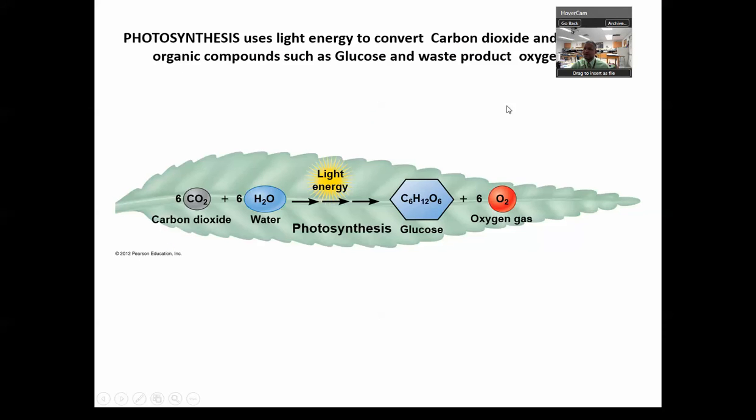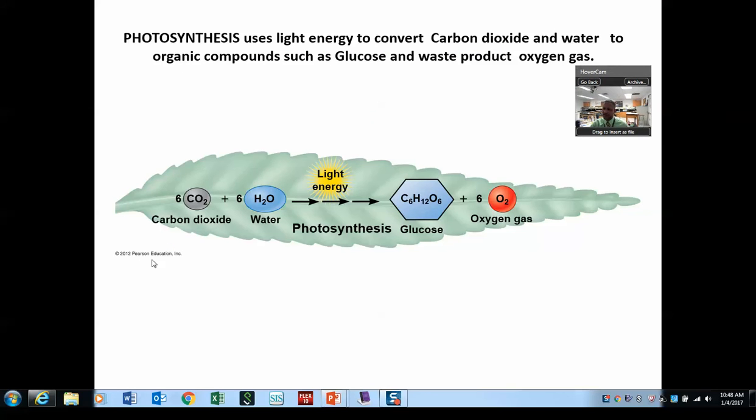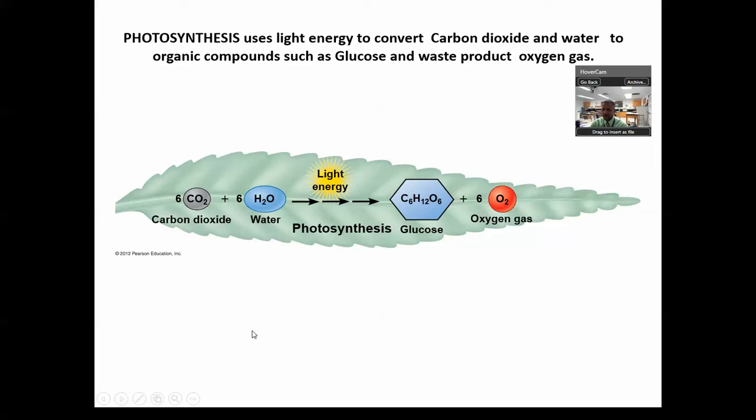Now let's start with what's important to understand: the formula, where this is taking place, and who does this. Photosynthesis uses light to convert carbon dioxide. It doesn't turn light into sugar, it uses light energy. So we're going to first talk about light energy.